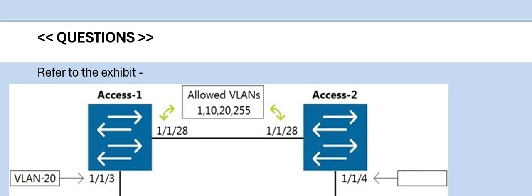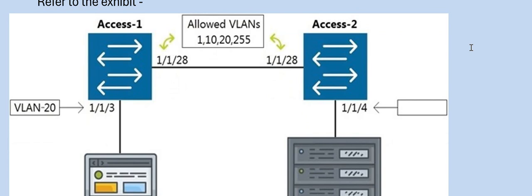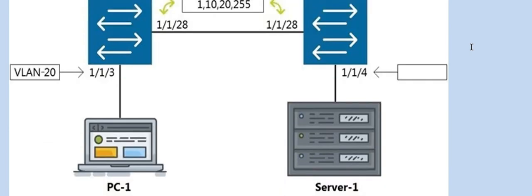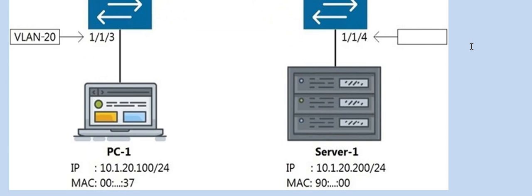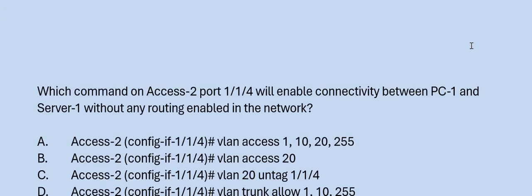Question: Refer to the exhibit. Which command on XSA2 port will enable connectivity between PC1 and Server 1 without any routing enabled in the network? Please have a look at the options. The correct answer is Option B.